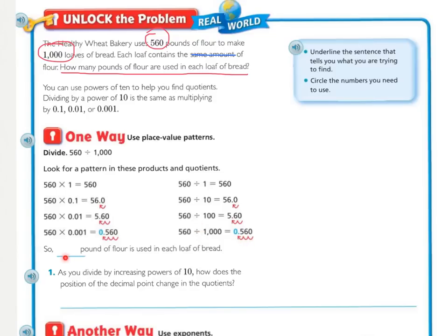So, how many pounds of flour are used in each loaf of bread? 1,000 is our divisor, so 560 divided by 1,000 is 0.560 — that's 560 thousandths pounds of flour for each loaf.